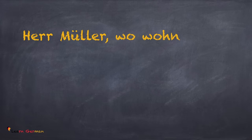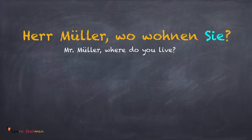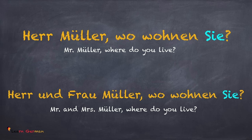Now let's see an example for each. Herr Müller, wo wohnen Sie? And while talking to more than one person, I would say: Herr und Frau Müller, wo wohnen Sie? Please remember that Sie here is always written with a capital S, irrespective of whether it's in the middle or the beginning of a sentence.